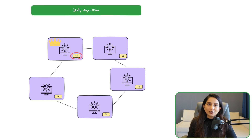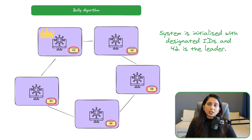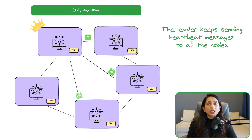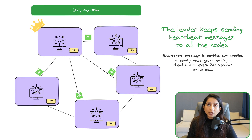Let's consider a distributed system of five nodes with different IDs assigned to every node, with 42 being the highest ID. When the system is initialized, node 42 becomes the leader by default. Since it's the leader's responsibility to coordinate all tasks and manage state, the leader continuously sends heartbeat messages to all other nodes. Heartbeat messages can be an API call to a /health endpoint or events marking that they are heartbeat events — they can be empty messages.